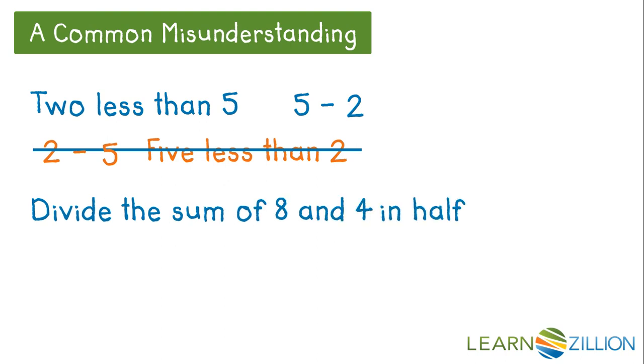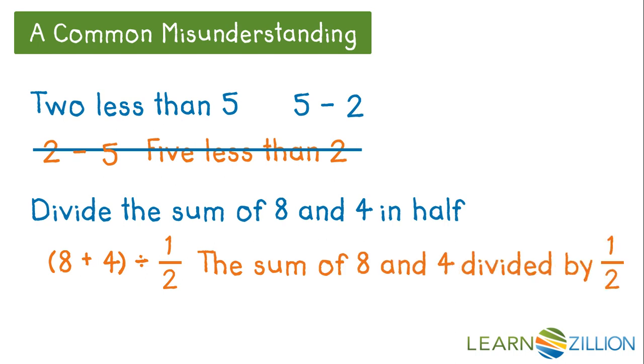Divide the sum of 8 and 4 in half. Sum of 8 and 4 you would add. And then you might see divide, so you put a division sign. And then you see half, so you might write 1 half. But 8 plus 4 divided by 1 half is not the same thing as 8 plus 4 divided in half. What this numerical expression says is the sum of 8 and 4 divided by 1 half. The correct way to write it would be 8 plus 4 divided by 2 or 1 half times 8 plus 4.